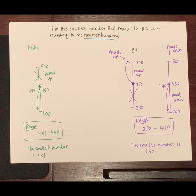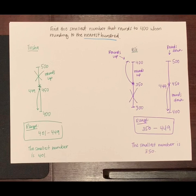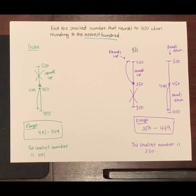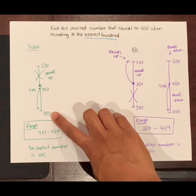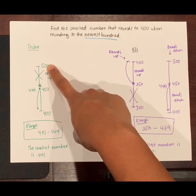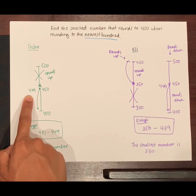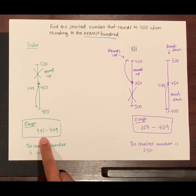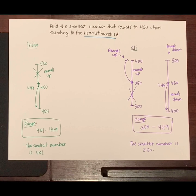I heard friends say that they agree with Trisha because she identified a range of numbers that round to 400. She showed all the numbers that round down to 400 because she knows 450 and up rounds up to 500. So, 449 must be the first number below 450 that rounds down. The range she came up with is 401 to 449. The smallest number within that range is 401.